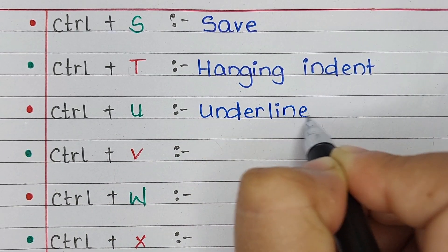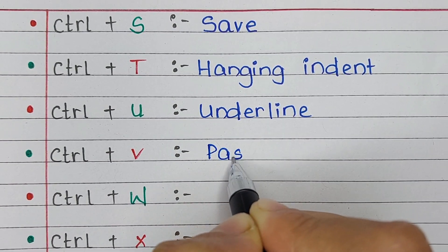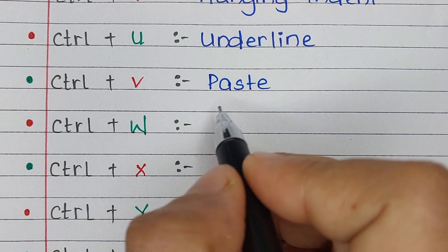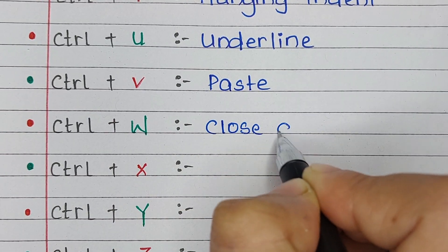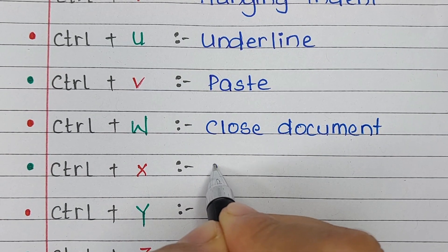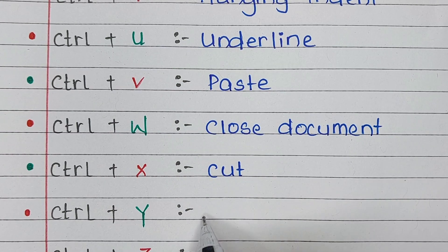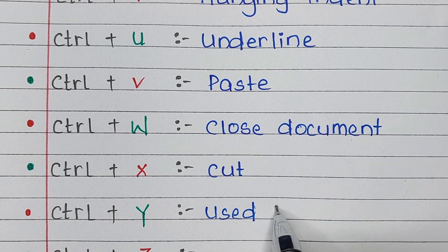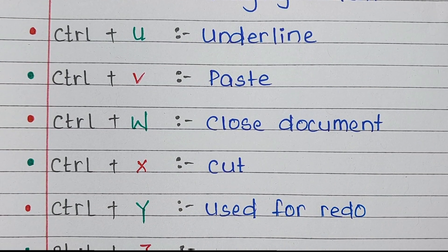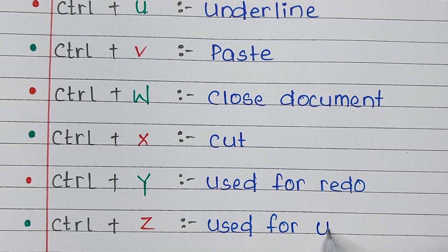Next one is Ctrl U. Ctrl U is the shortcut for underline. Next is Ctrl V. Ctrl V is the shortcut for paste. Next one is Ctrl W. Ctrl W is the shortcut for close document. Next is Ctrl X. Ctrl X is the shortcut for cut. Next is Ctrl Y. Ctrl Y is used for redo. Then is Ctrl Z. It is used for undo.